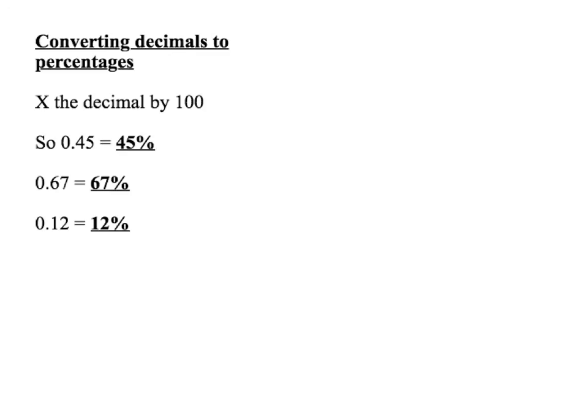You could be asked to convert decimals to percentages. If you've got a decimal, just times it by 100 and that gives you the percentage. Or if you need to do it the other way around — if you've got a percentage and want a decimal — you divide it by 100.